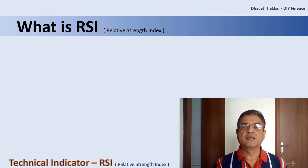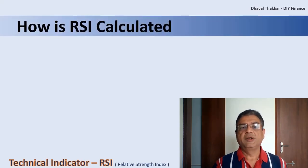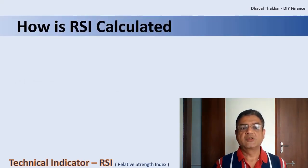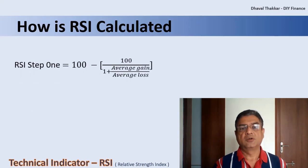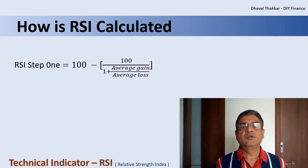The value of RSI is plotted on a scale of 0 to 100. RSI is calculated in two steps. In the first step, the average gain or loss used in the calculation is the average percentage gain or loss during a look-back period. The formula uses a positive value for the average loss; periods with price losses are counted as zero in the calculation of average gain, and periods with price increases are counted as zero in the calculation of average losses.